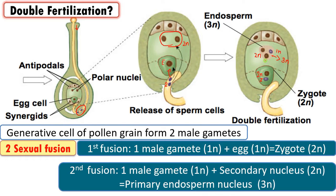So in angiosperms there are two sexual fusions: one male gamete fuses with the egg to form the zygote, and the second male gamete fuses with the secondary nucleus forming the primary endosperm nucleus or endosperm mother cell. That is why this fertilization is called double fertilization.